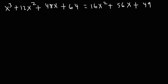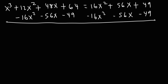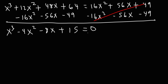At this point we need to do some algebra. Let's move everything from the right side to the left side by subtracting 16x squared, 56x, and 49 from both sides. Everything on the right cancels, and we get: x cubed — since 12 minus 16 is negative 4 — minus 4x squared — since 48 minus 56 is negative 8 — minus 8x, and then 64 minus 49 is positive 15. So we have the cubic polynomial x cubed minus 4x squared minus 8x plus 15.